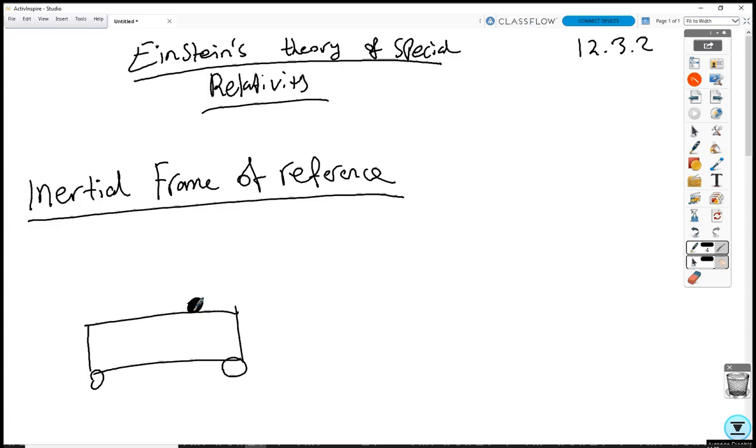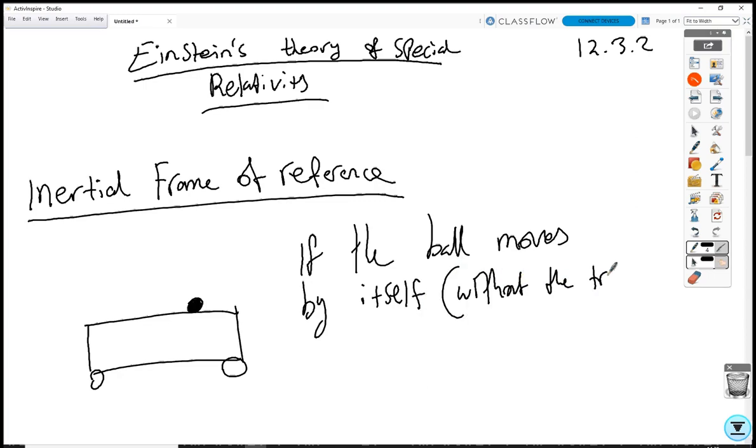Now, if the ball moves by itself, not with the train, so if the ball appears to move relative to the train, it's no longer in an inertial frame of reference. If the ball moves by itself without the train, then it's not in an inertial frame of reference.